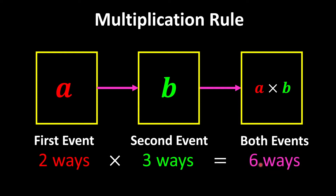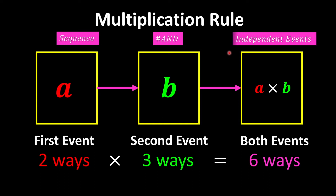To choose the phone and a device, we use the multiplication rule: two times three, which is six ways. To use the multiplication rule, we must make sure the events are in a sequence and there is the keyword 'and', like 'choose a phone and a device'. We also need to make sure both events are independent of each other — the choices in B wouldn't be affected by the choices in A. For example, choosing an iPhone doesn't prevent you from choosing a MacBook.